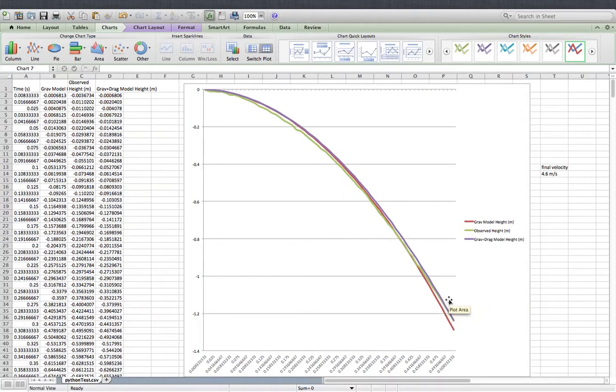There are two things to note about this. One is both models, gravity and drag, coincide pretty similarly. For most of the fall they predict roughly the same things, up until about here, where the gravity-only model starts to over-predict the motion.